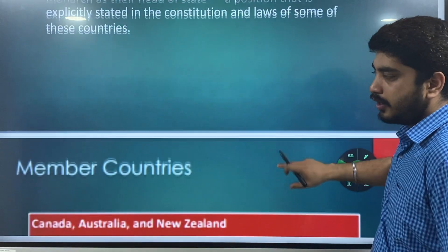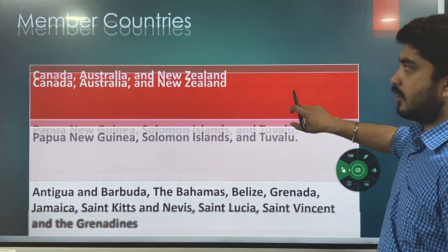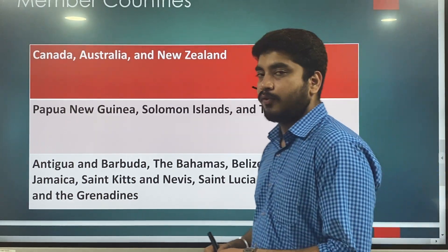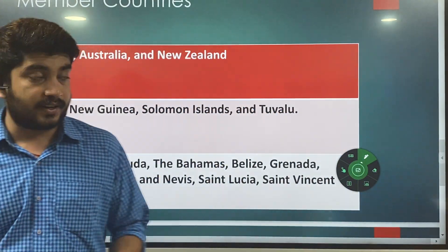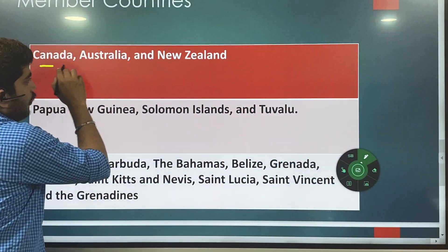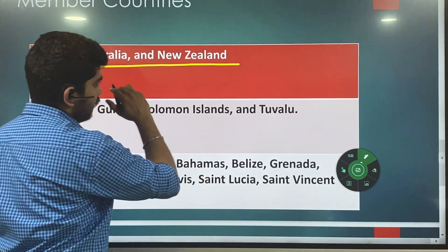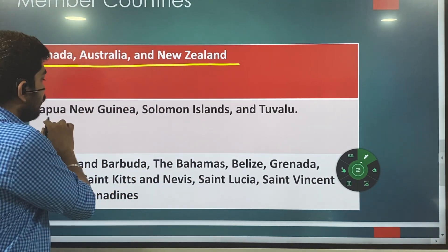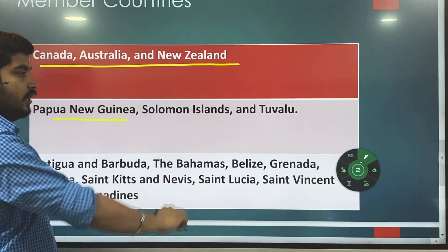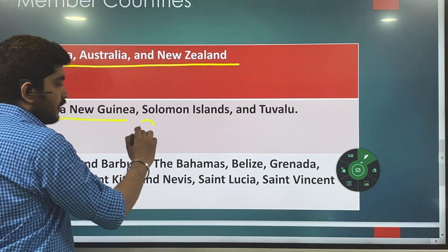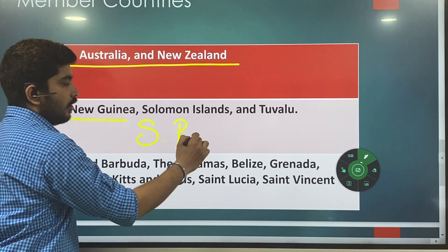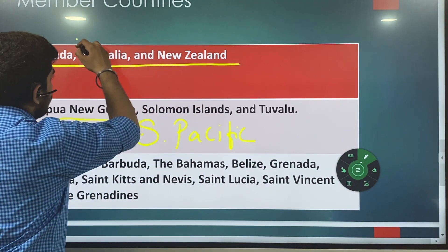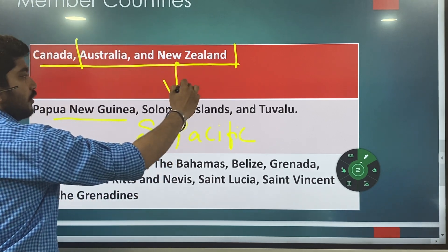Who are the member countries? I have categorized them into three groups so that it will be easy for you to remember. In the first category, you have Canada, Australia, and New Zealand — these three are well-notable. Then you have Papua New Guinea, Solomon Islands, and Tuvalu. These are countries located in the southern Pacific, and Australia and New Zealand are also located in the same region.